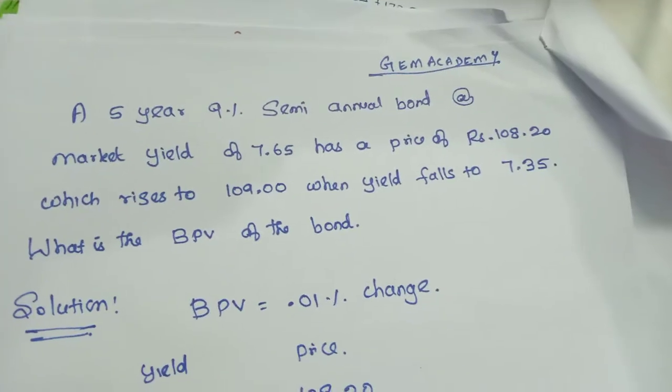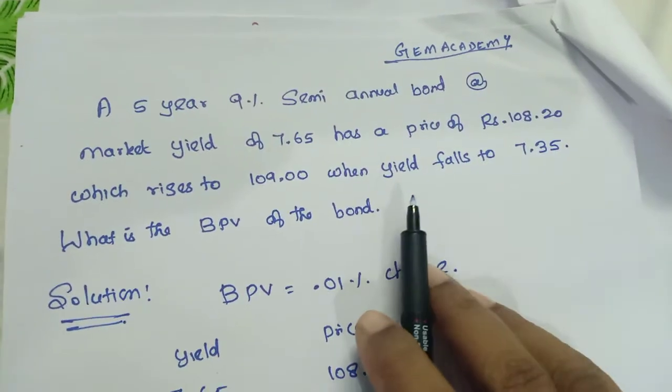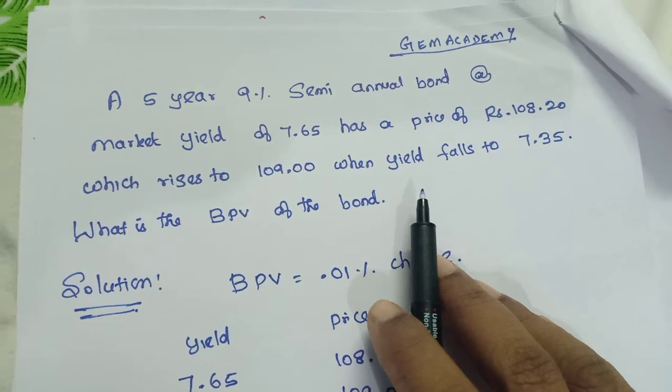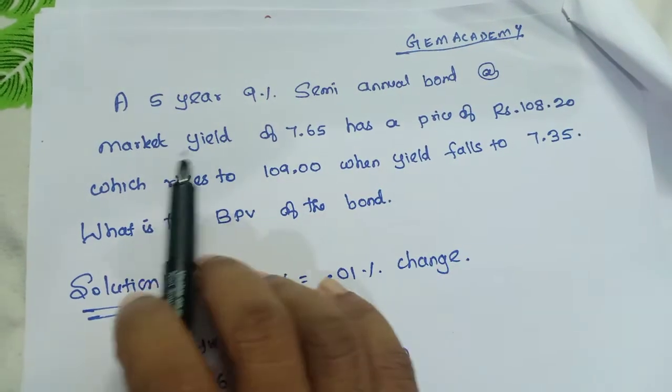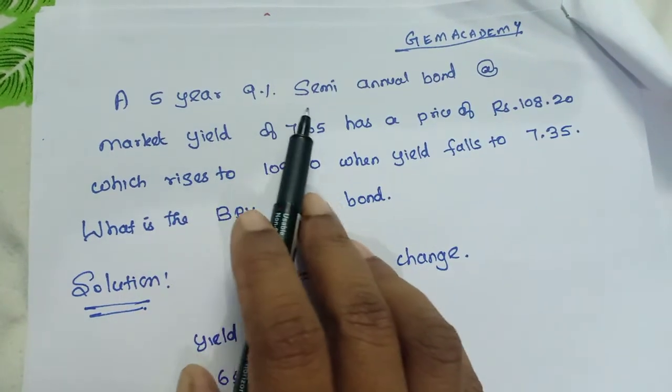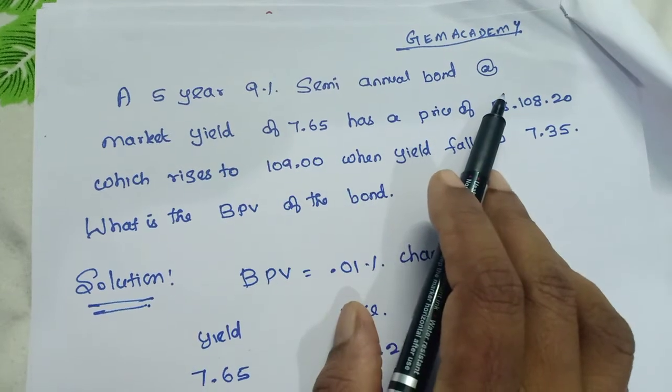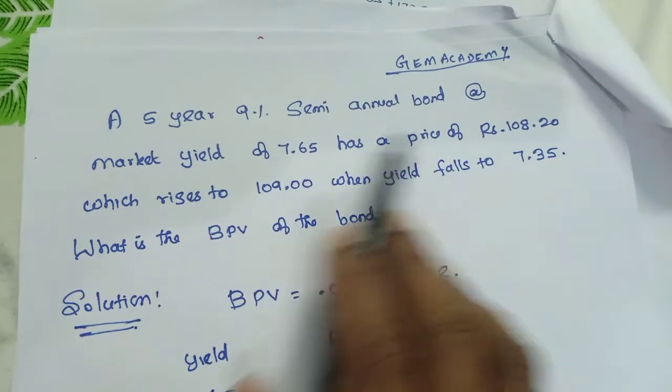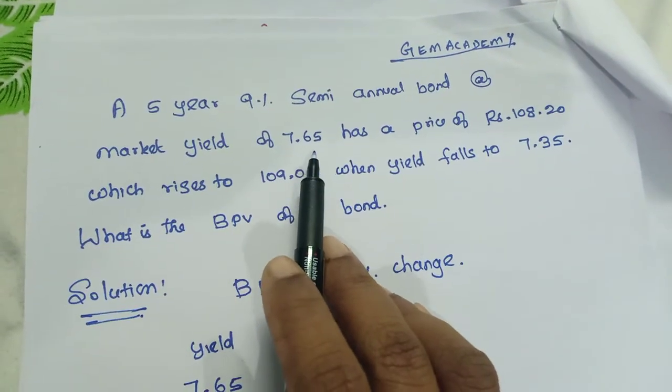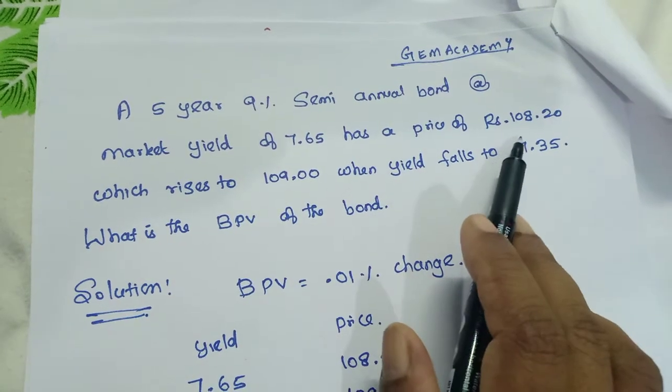Hello friends, welcome to Gym Academy. Now what we are going to see is an important problem in BPV, Basis Point Value. A 5-year 9% semi-annual bond at market yield of 7.65% has a price of rupees 108.20.